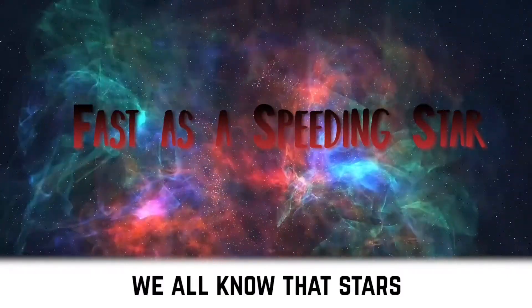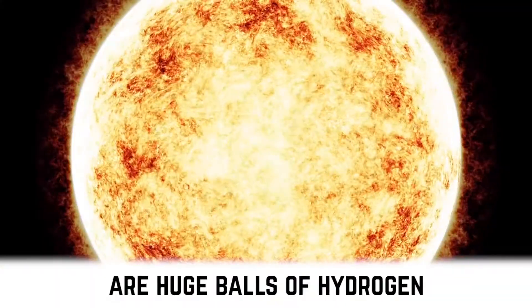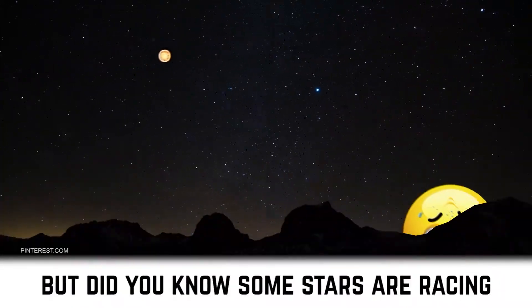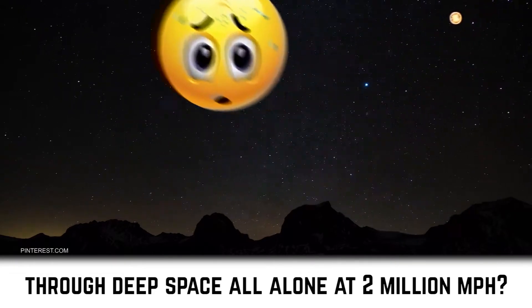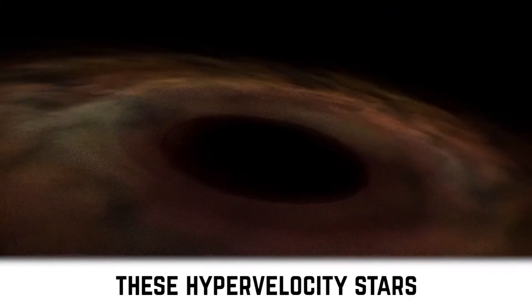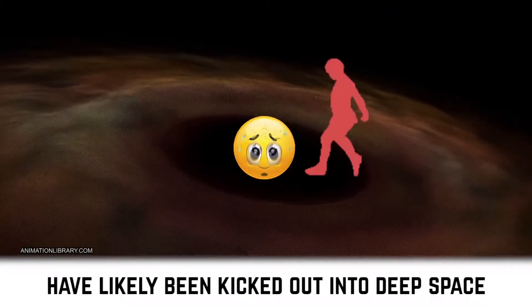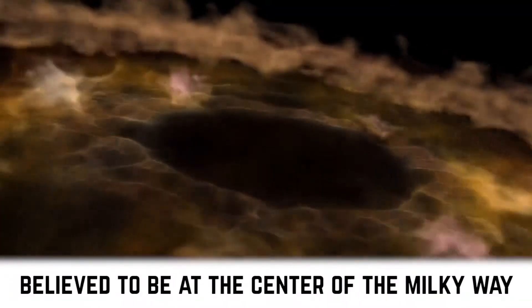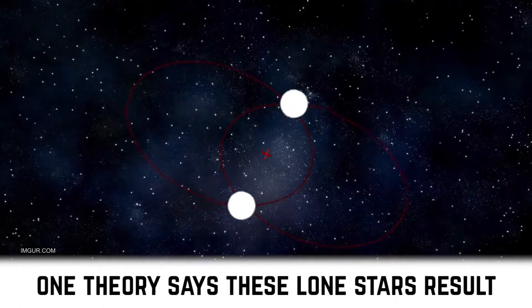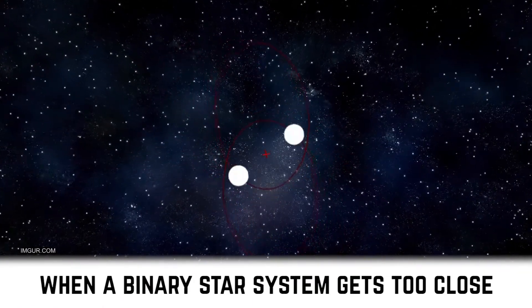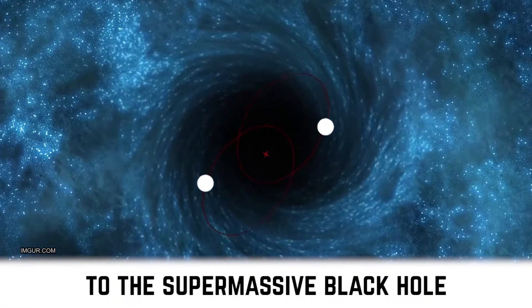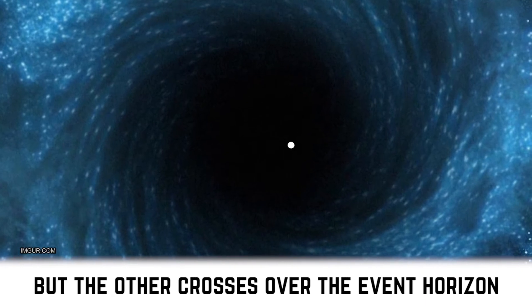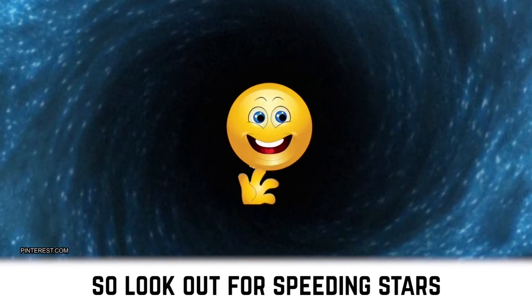We all know that stars, like our own Sun, are huge balls of hydrogen that are at the center of solar systems. But did you know some stars are racing through deep space all alone at 2 million miles per hour? These hypervelocity stars have likely been kicked out into deep space by the supermassive black hole believed to be at the center of the Milky Way. One theory says these lone stars result when a binary star system gets too close to the supermassive black hole and one star manages to escape, but the other crosses over the event horizon. So look out for speeding stars!